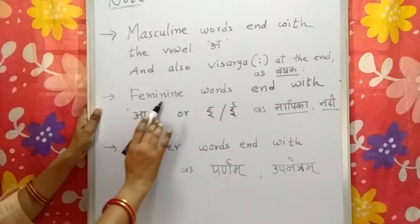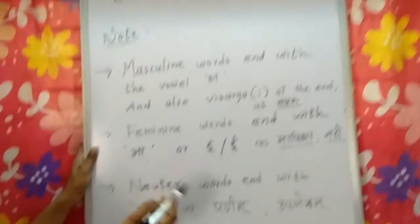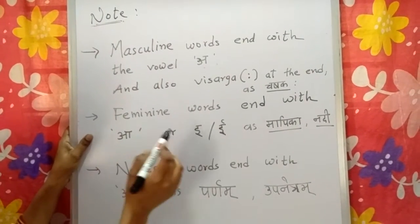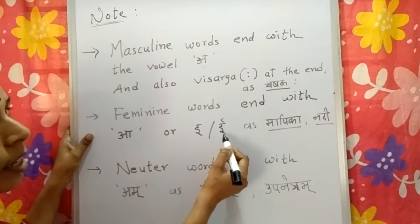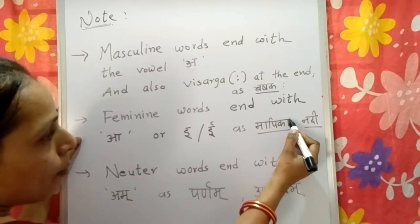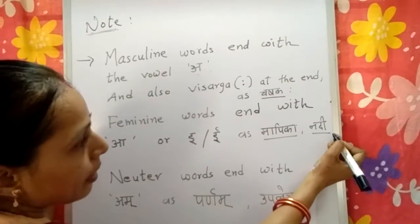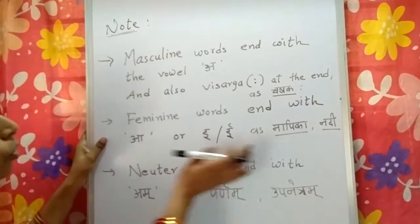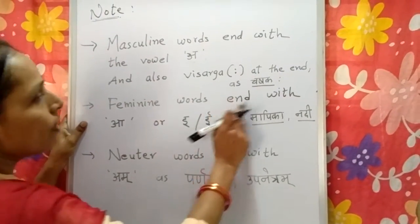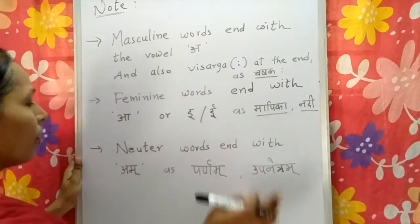Now the second point: feminine words. In Chitrapadhani 2 there are feminine words — words which end with the vowel 'ā' or 'ī'. For example, maapika — maapika ends with 'ā', and nadhi ends with 'ī'. So in Chitrapadhani 2 there are feminine words, and feminine words always end with 'ā' or 'ī'.